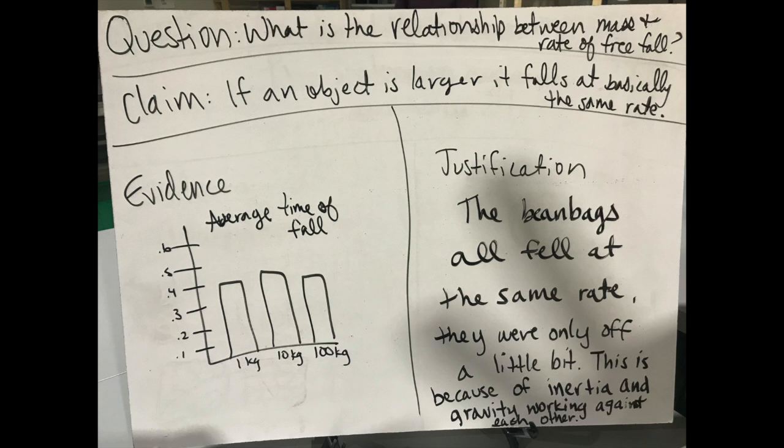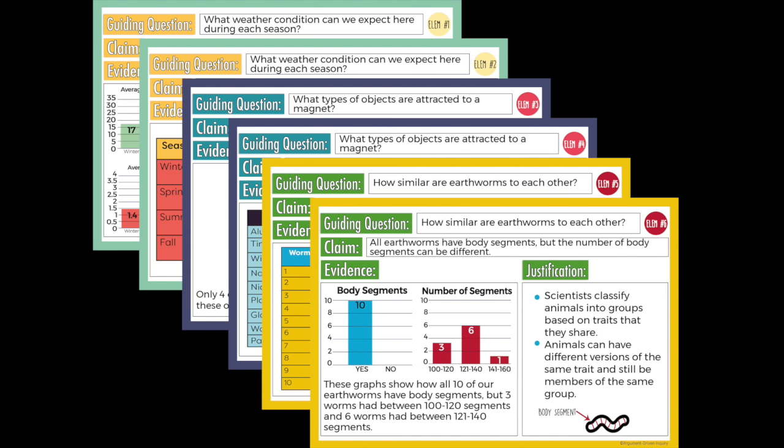After a while, they will start putting their analysis in the evidence box and their interpretation in the justification box. This is especially true for students who have already been working with claim evidence reasoning. To help with this stage, we recommend using our argument cards to have students sort sample whiteboards into strong and weak arguments, and then debrief that as a class.